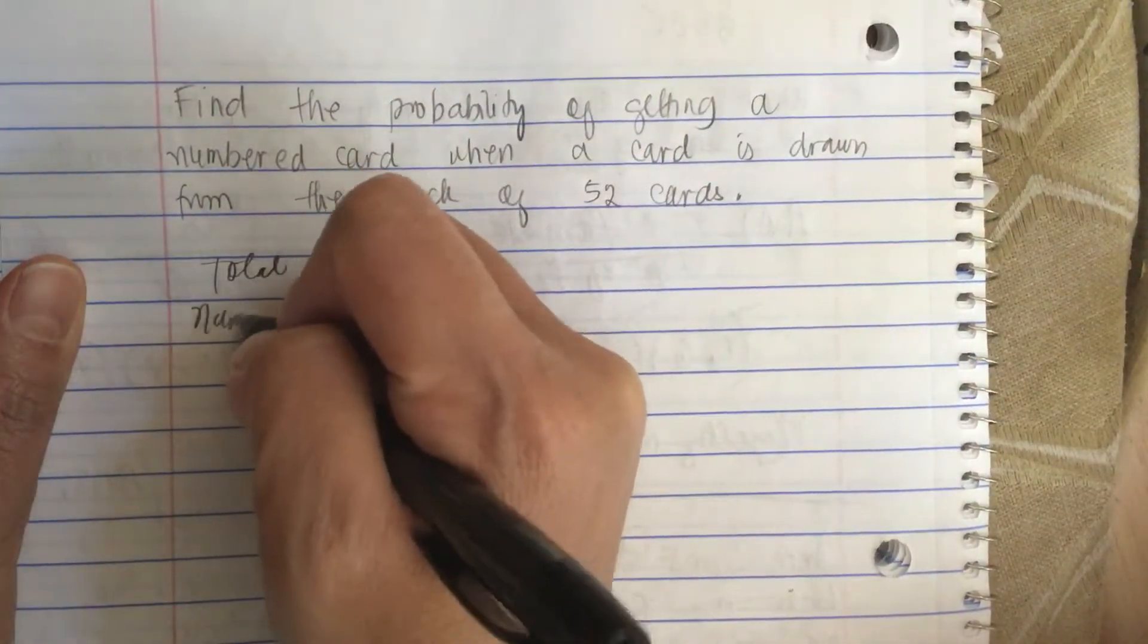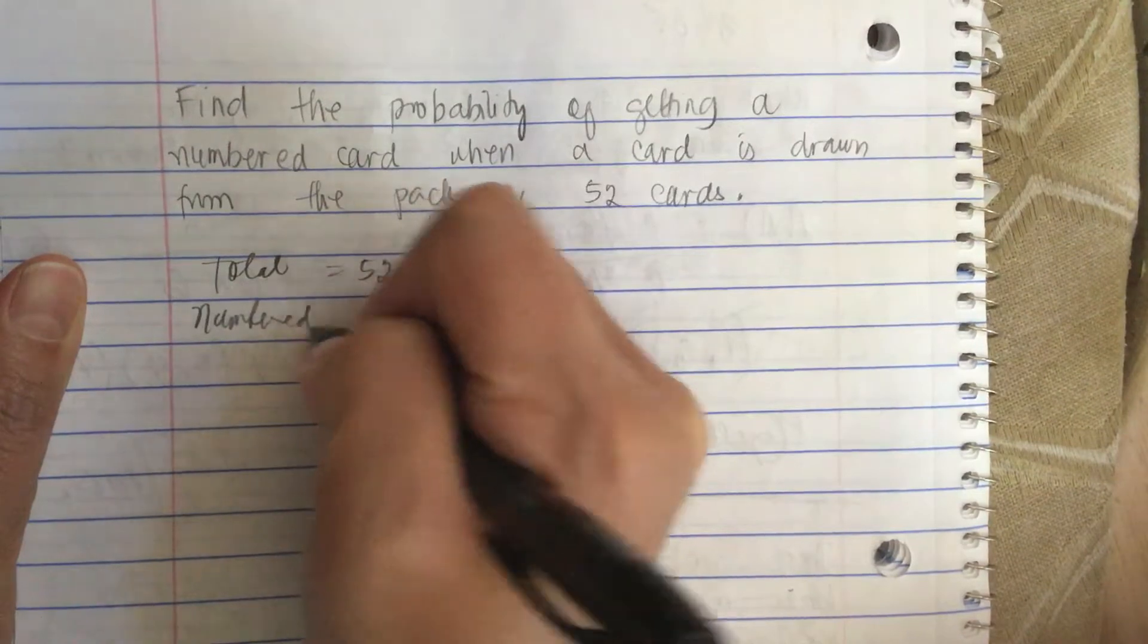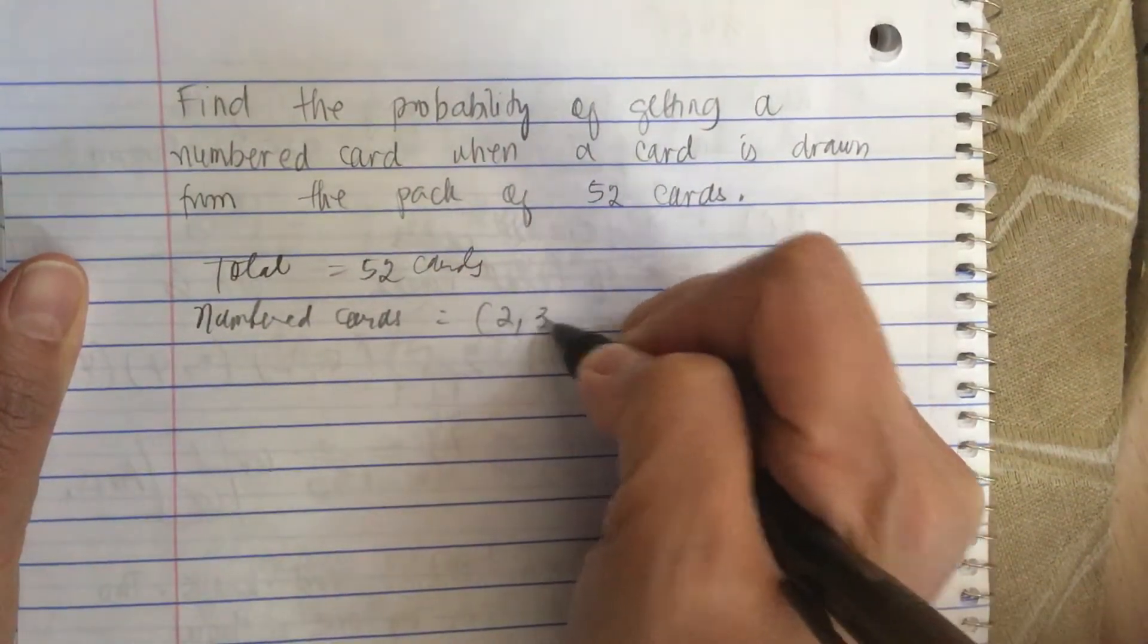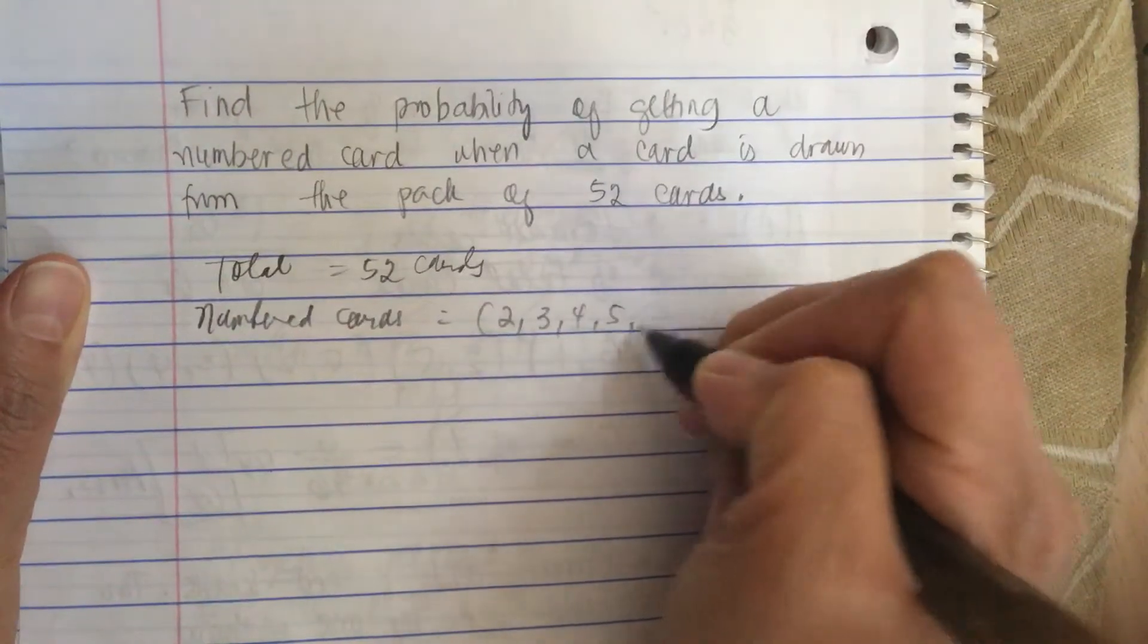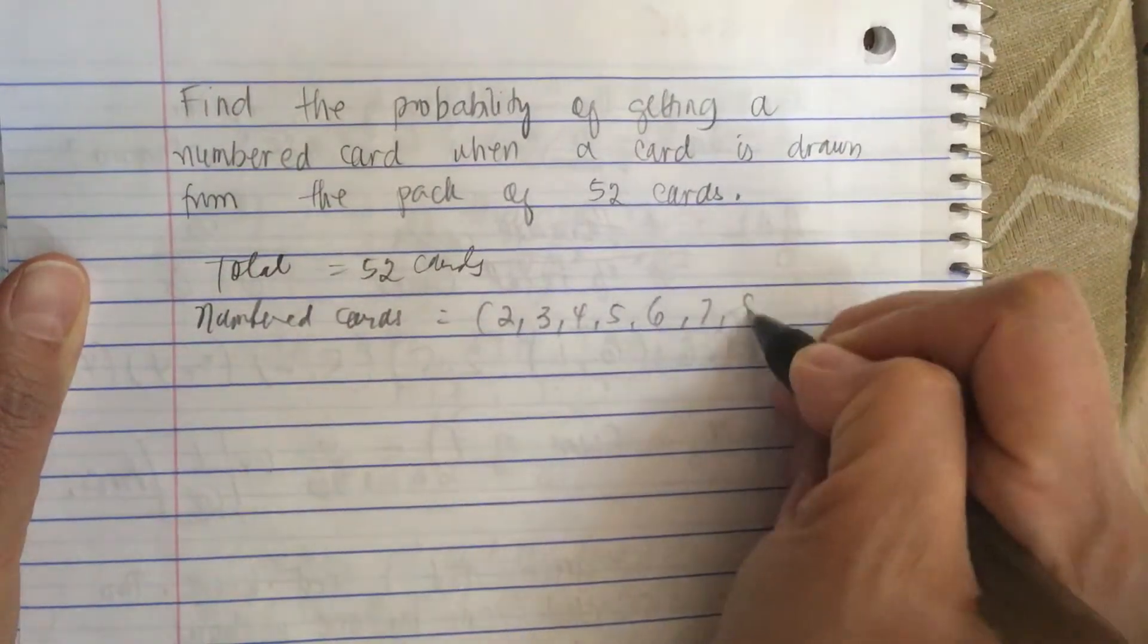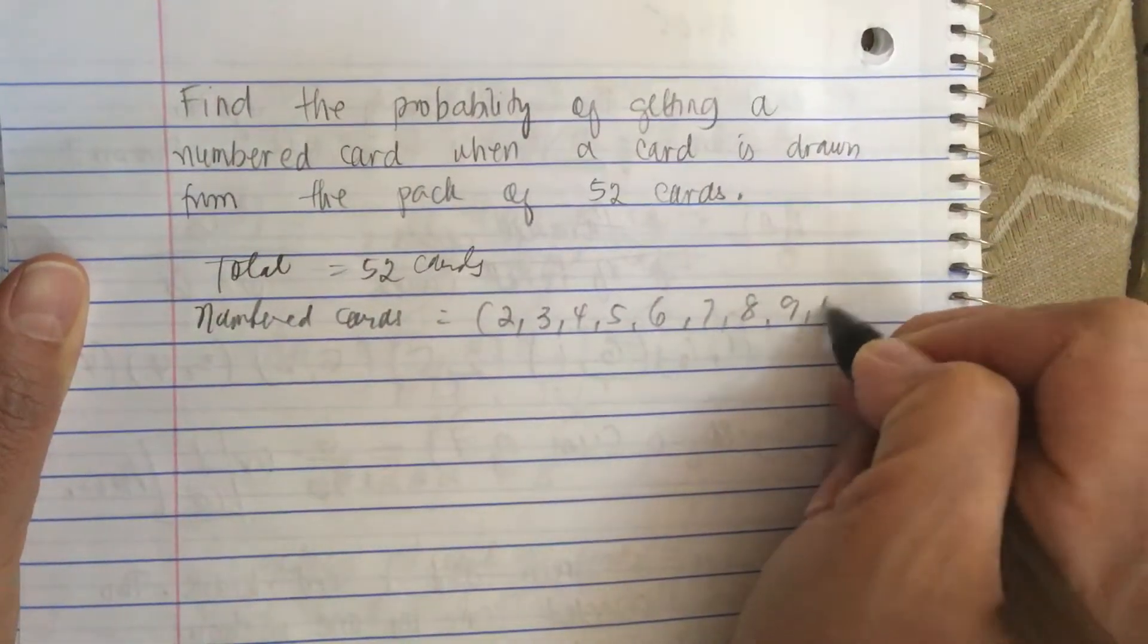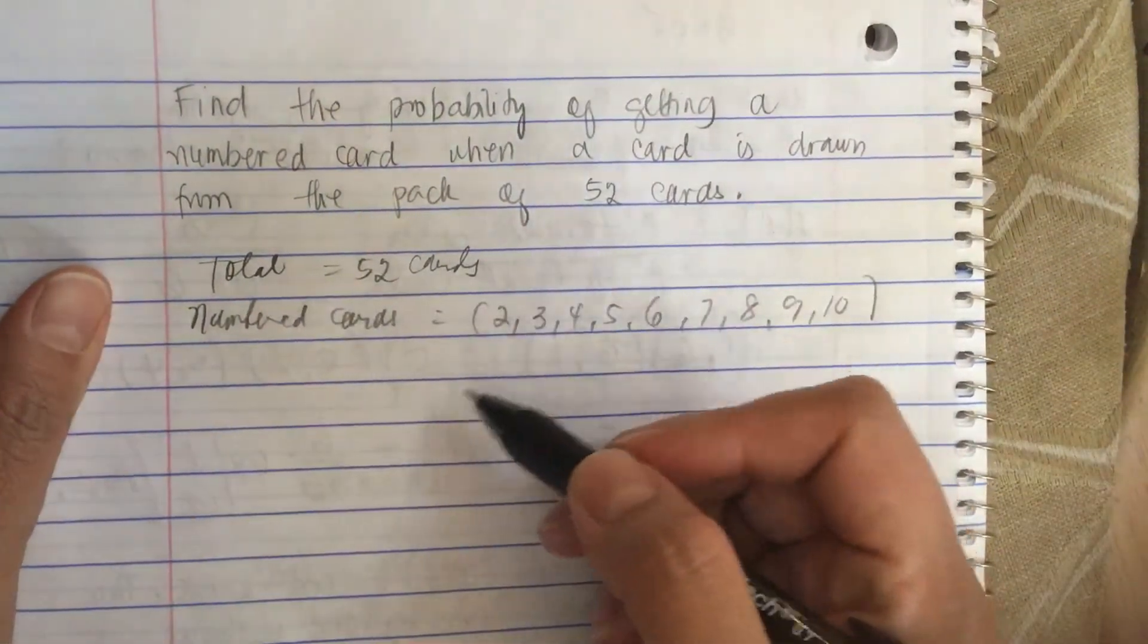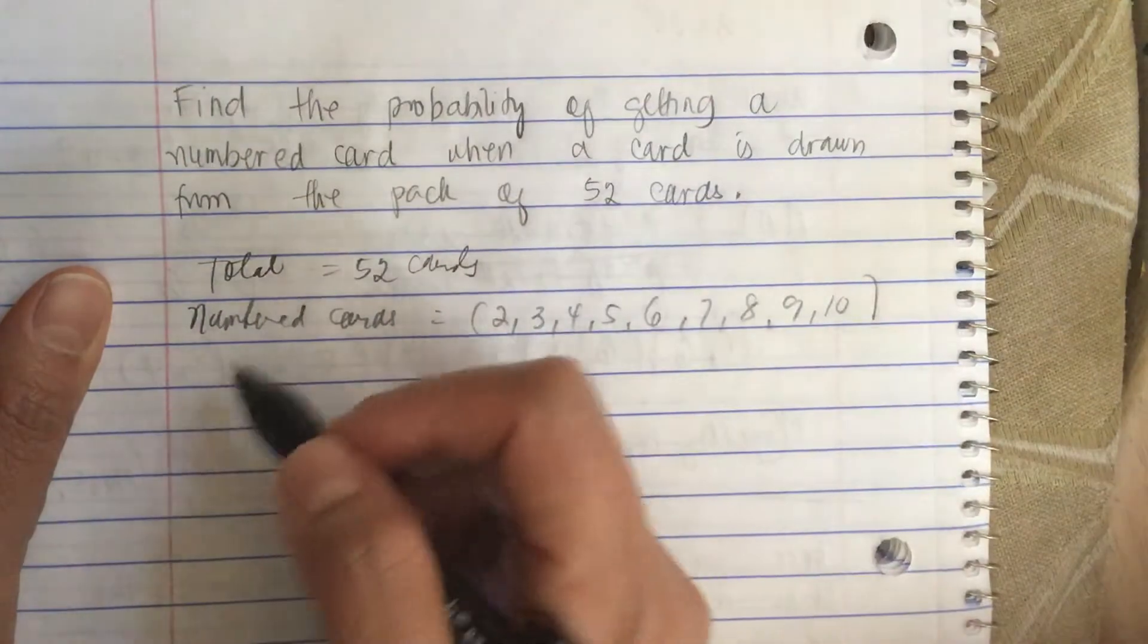Now the numbered cards are 2, 3, 4, 5, 6, 7, 8, 9, and 10, because the face cards are Jack, Queen, King, and then of course the Ace.